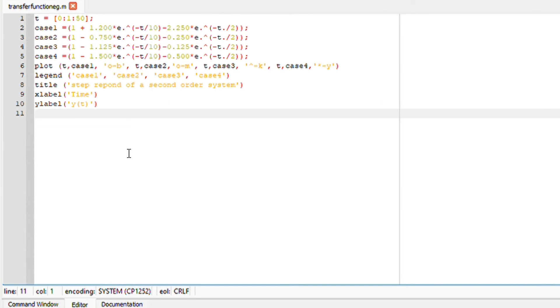If I open Octave, I'm going to work on my editor section. I'm going to write down each equation per case. For the time, I'm going to calculate this with a time scale of 0 to 50 with a spacing of 1.